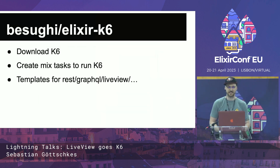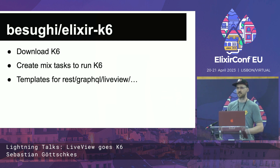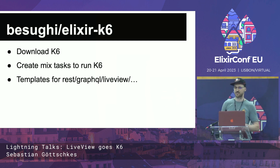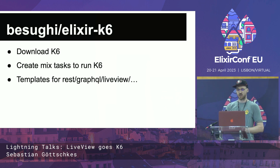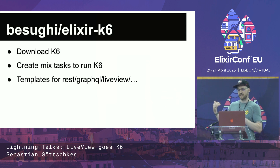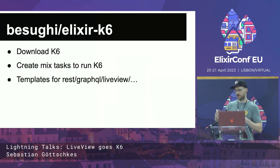In Elixir, we have the Elixir K6 library, which was developed at Spawnfest 2021. It's a neat little wrapper — it downloads K6 in the background and gives you some Mix tasks, so you don't need to interact with K6 directly. You can just type something like `mix k6.run`. You also get templates that provide scaffolding for REST, GraphQL, and LiveView, which give you a kickstart, but don't help you much further beyond that.